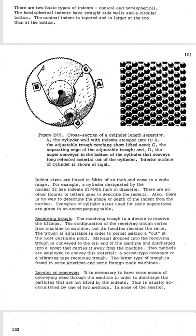This figure shows a cross section of a cylinder length separator. A stands for cylinder wall with indents stamped into it. B stands for the adjustable trough catching short lifted seed. C stands for the separating edge of the adjustable trough. D stands for the auger conveyor in the bottom of the cylinder that conveys long-rejected material out of the cylinder. The integrated surface of the cylinder is shown at the right side.